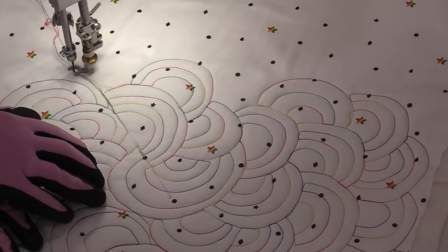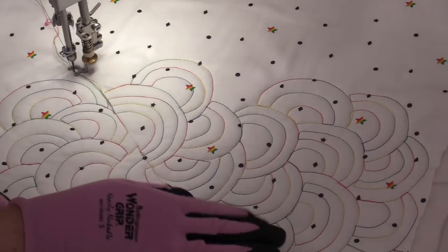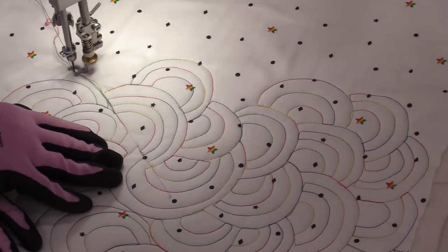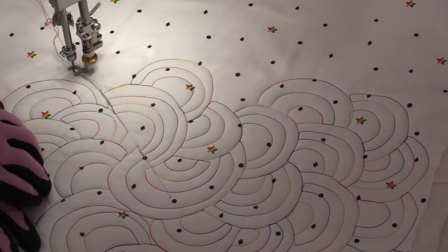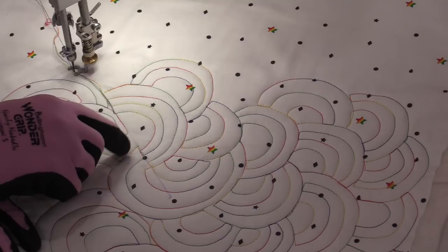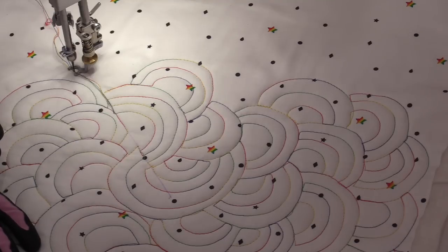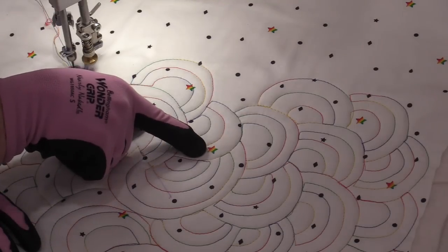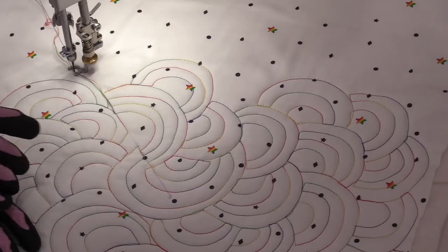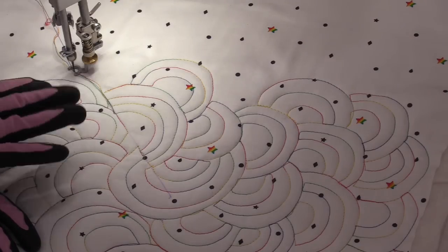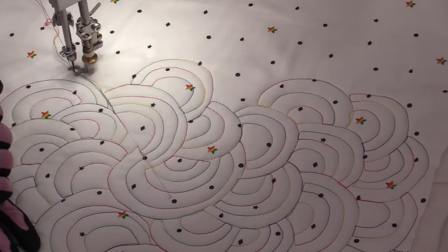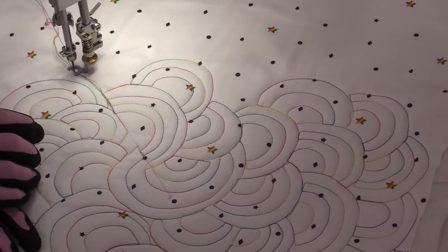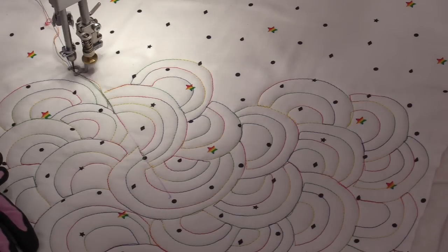It can look like rainbows, it can look like shells, it can look like water, it can look like clouds, and I'm sure there's a lot of other things that it can look like depending on the fabric that we have. The fabric is going to kind of trick us to think what it is. Because we have little rainbows here, we're going to automatically think rainbows. But if this was brown, we might think of it as shells. It's a fun pattern to try, and definitely a fun one to do.